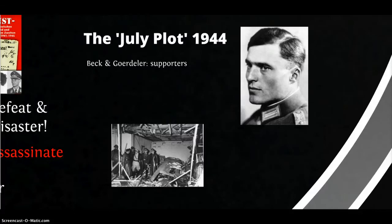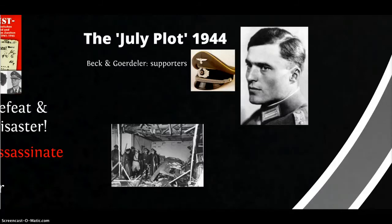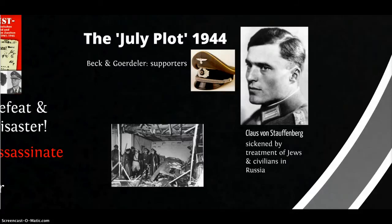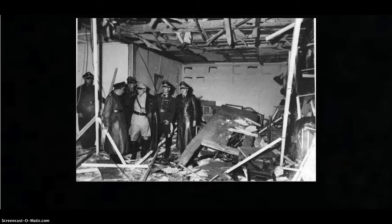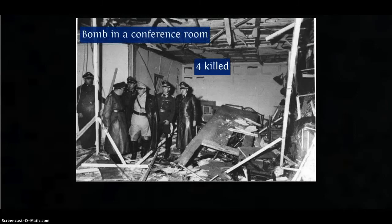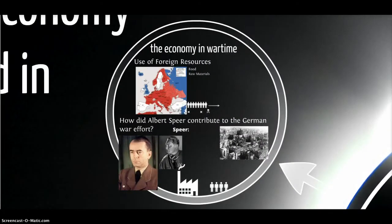Beck and Gördeler had some supporters within the senior ranks of the German military — by no means all, but some senior members. This officer, Klaus von Stauffenberg, had become sickened by the treatment of Jews and civilians in Russia and deeply opposed to the war. He agreed to take part in a plot to assassinate Hitler. At the Wolf's Lair in East Prussia — a military base from which Hitler was coordinating the defence of Germany — Stauffenberg left a bomb in an attaché case under the table and left the room. The bomb exploded and killed four people, but unfortunately Hitler was shielded by one of the sturdy table legs and survived with minor injuries. The conspirators were arrested and executed.